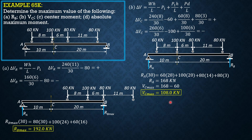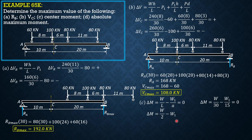For moment at the center, the criterion is delta M equals W/L minus W1/A, where L is 30 and A is half of 30, which is 15. This simplifies to W over 2 minus W1 equals 0. Assuming loads move from right to left, when the 60 kN load is just to the left of the center, it becomes part of W1. When it is just to the right, there is no minus W1, so the sign is positive.